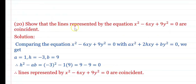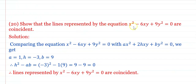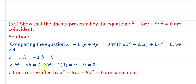Show that the lines represented by x² − 6xy + 9y² = 0 are coincident. Comparing with ax² + 2hxy + by² = 0: a = 1, h = −3, b = 9. Then h² − ab = (−3)² − 1×9 = 9 − 9 = 0. Since h² − ab = 0, the lines represented are coincident.